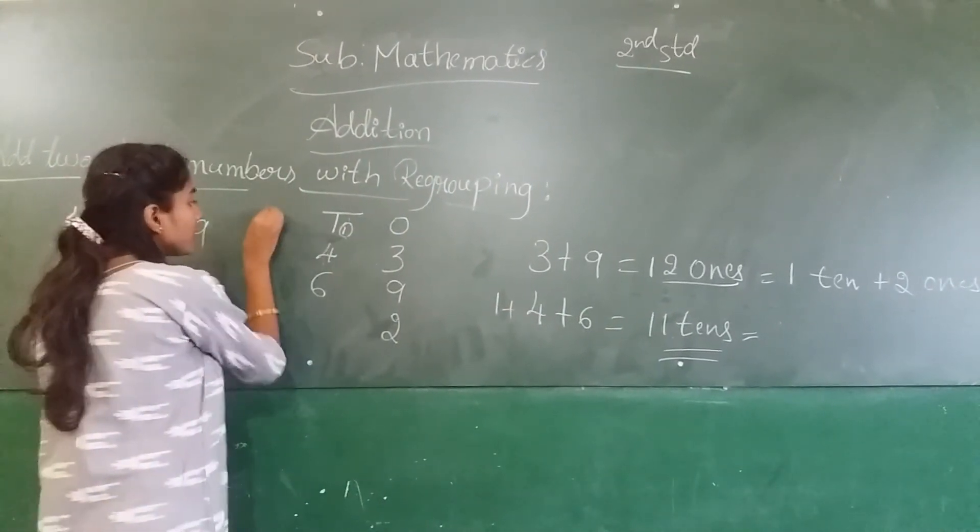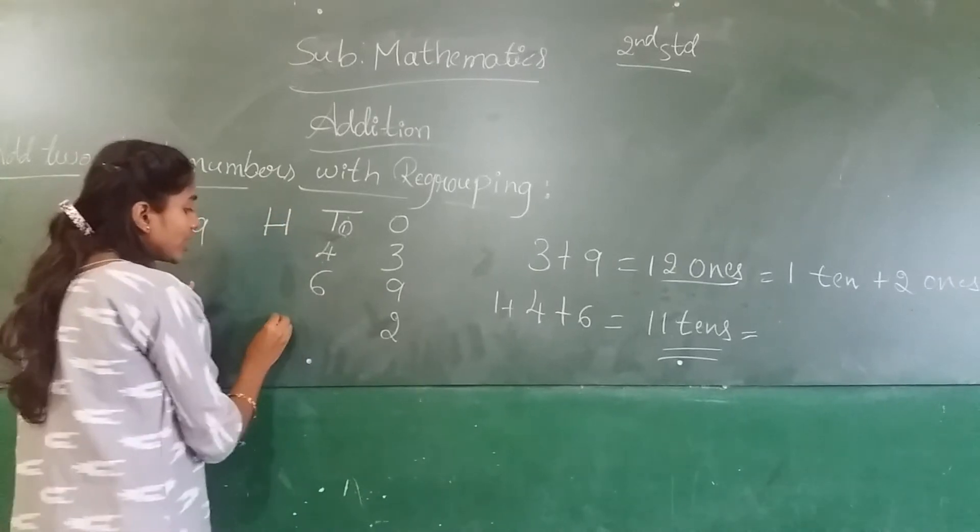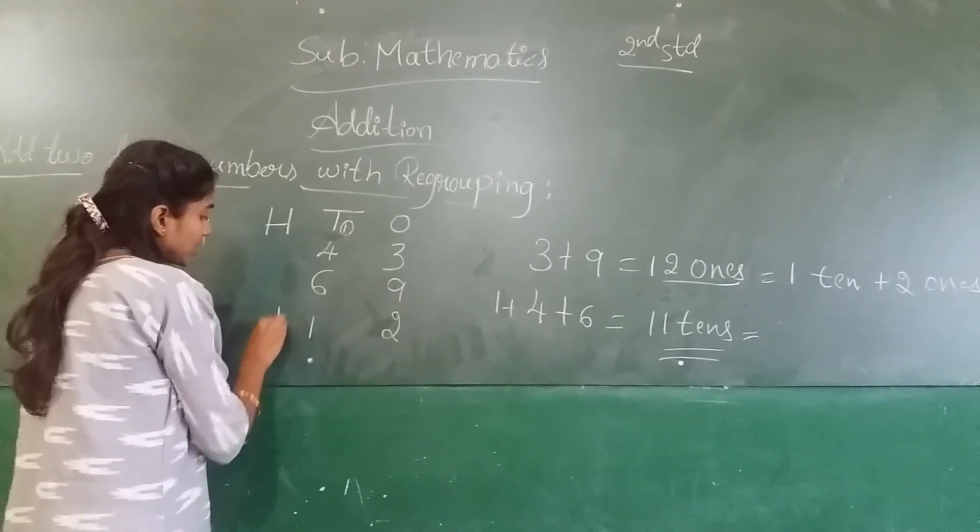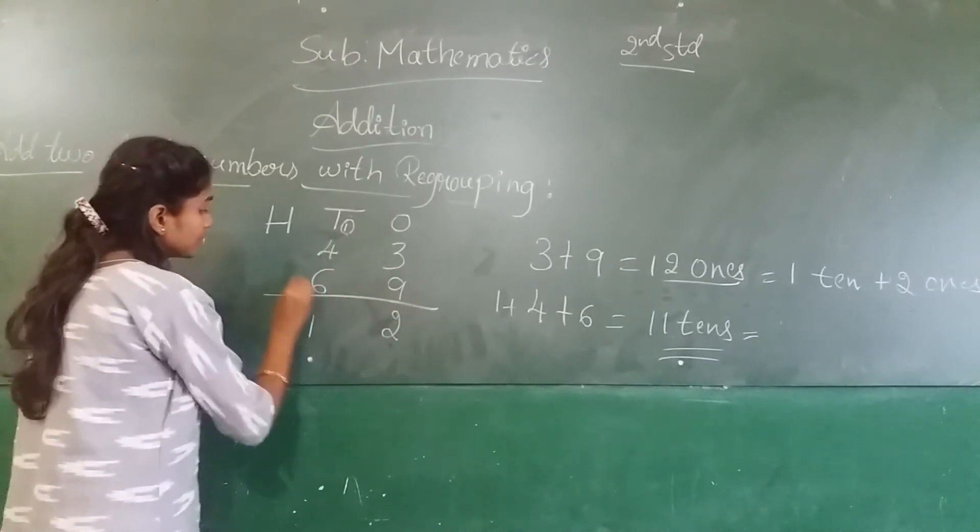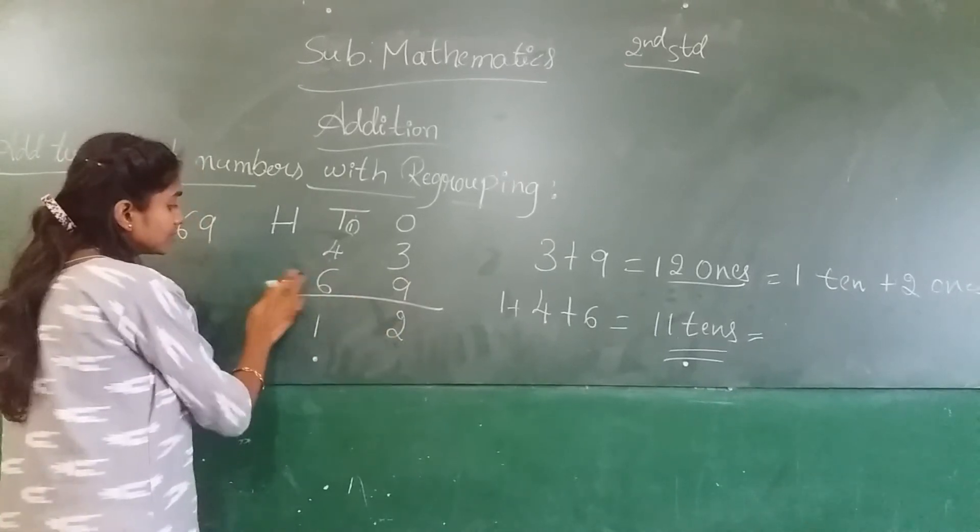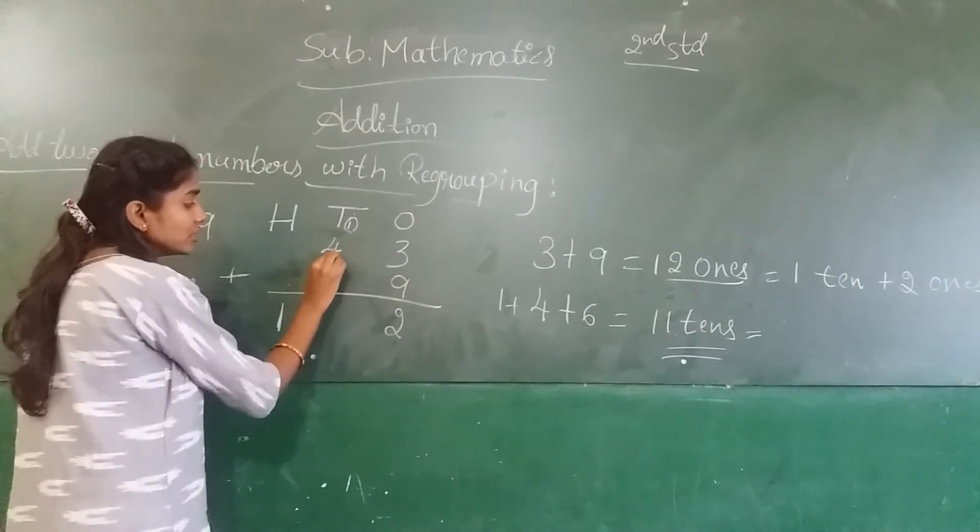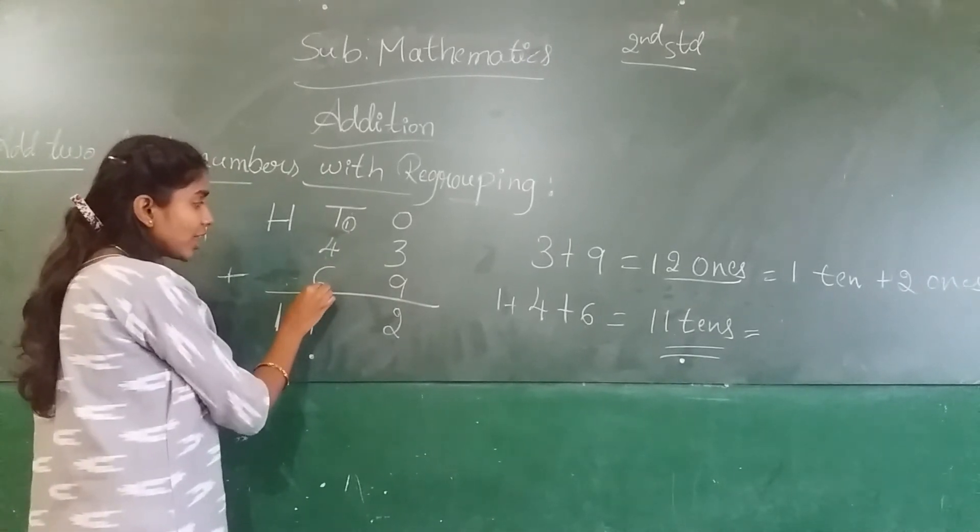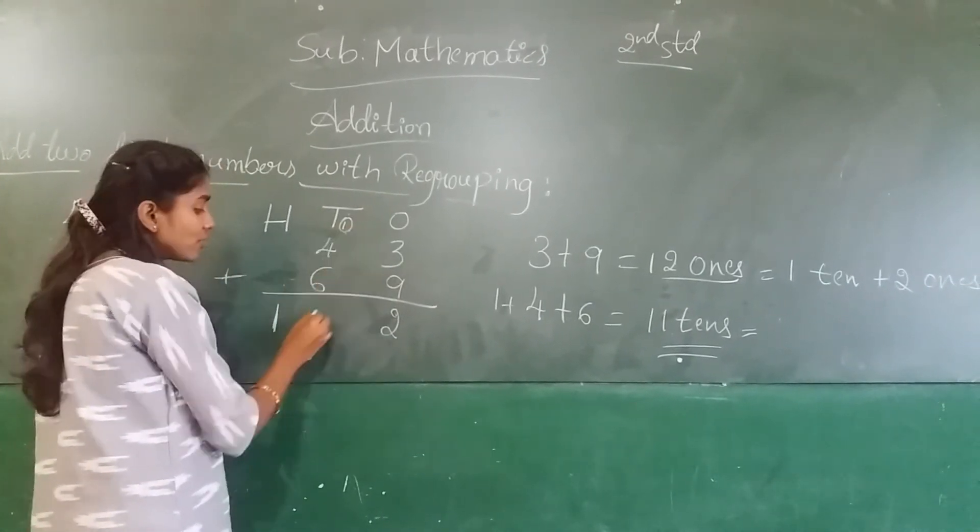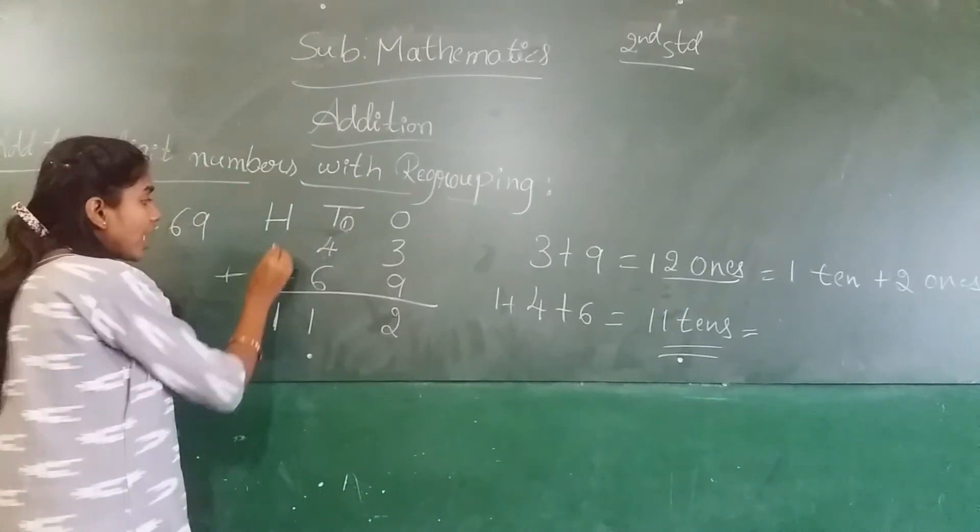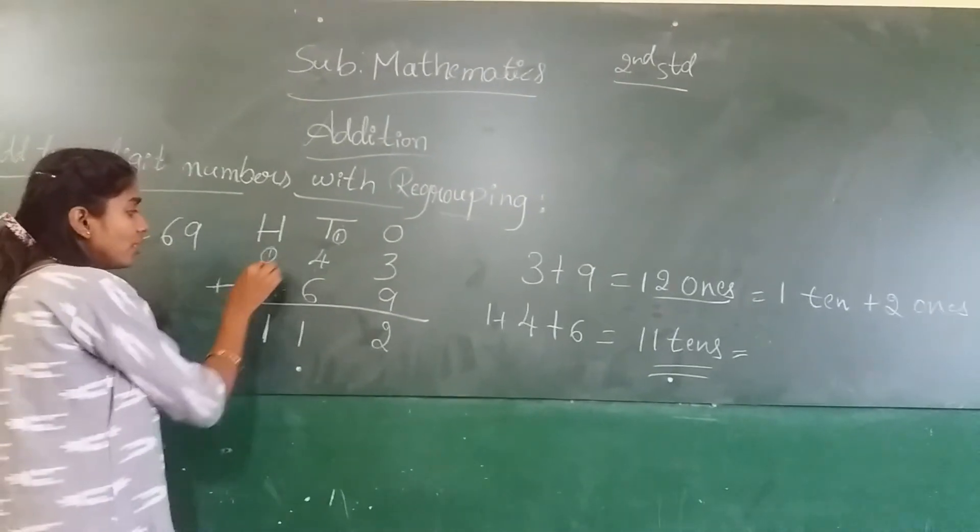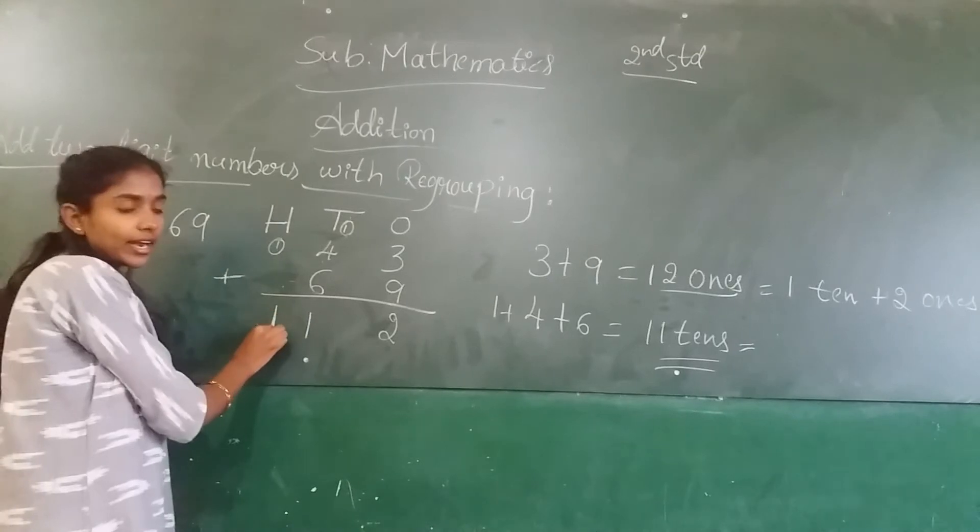Now, next column is tens. Once you place 2, next 4 plus 6, tens, plus carryover, 1 is more to 11. So, and another carryover here. So, 1, 1 is in 100 place.